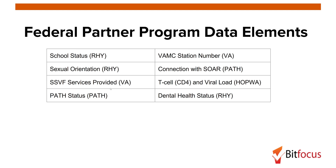Federal partner program data elements are specific to each federal partner. For example, T-cell, CD4, and viral load are collected for clients in HOPWA-funded projects. Other elements include VA-MC station number and SSVF services provided for VA-funded projects, and sexual orientation, school status, and dental health status for RHY-funded projects, and PATH status in connection with SOAR for PATH-funded projects.